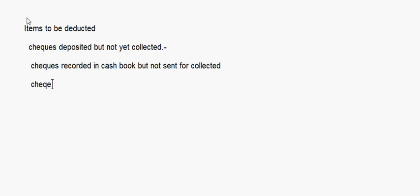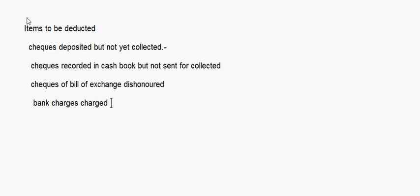Checks or bills of exchange dishonored: whenever any check or bill of exchange is dishonored, the bank debits the amount, so the overdraft balance as per the cashbook is less and as per the passbook it will be more — so this should be deducted. Bank charges: whenever the bank charges any amount, the overdraft balance as per the passbook goes up, so comparatively the overdraft balance as per the cashbook is less — this should be deducted.